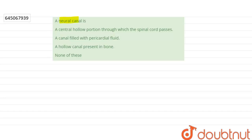The question says that a neural canal is: a central hollow portion through which the spinal cord passes, a canal filled with pericardial fluid, a hollow canal present in bone, or none of these.